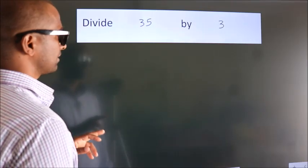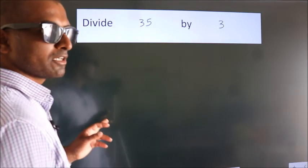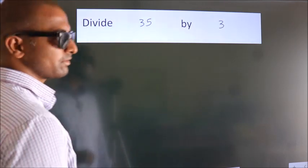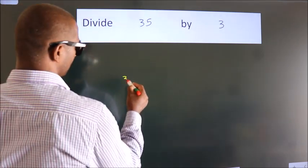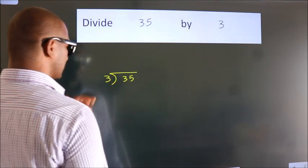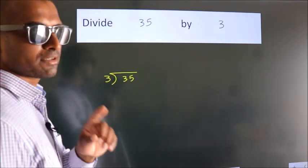Divide 35 by 3. To do this division, we should frame it in this way: 35 here, 3 here. This is your step 1.